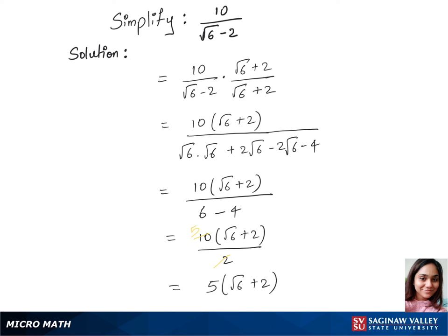Let's multiply 5 times 2 is 10 plus 5 times root 6 is 5 root 6. That's our final answer.